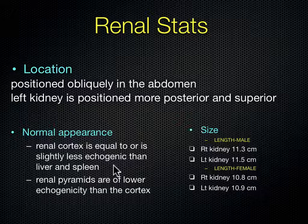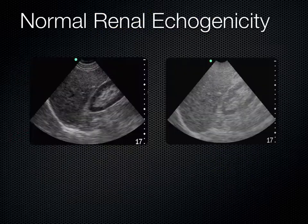Why is the left kidney bigger than the right? The aorta travels out of the heart and down the left side of the spine. Because the left kidney is closer to the aorta, it gets more of a direct blood supply and gets a little bigger over time. That's why the left kidney is bigger than the right — it's closer to the aorta.